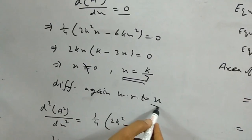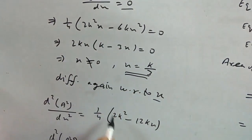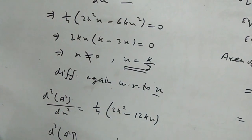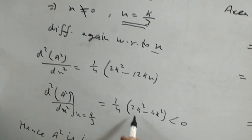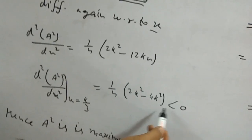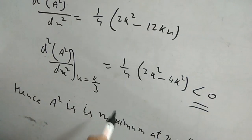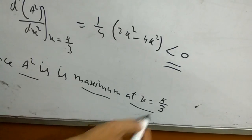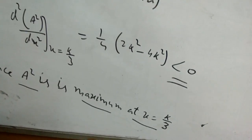Again differentiating with respect to x, we differentiate 2k square minus 12kx. Substitute k by 3: we get 2k square minus 4k square is negative. Hence, A square is maximum at x equals k by 3. The first part we have done.